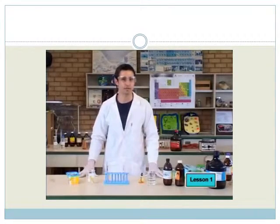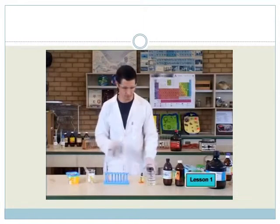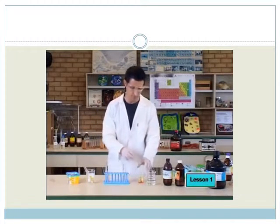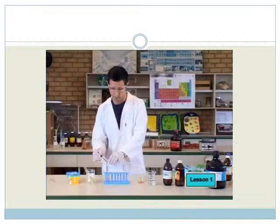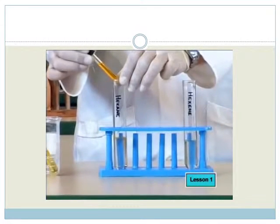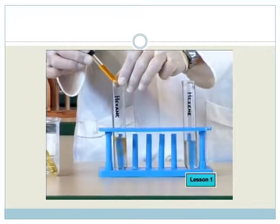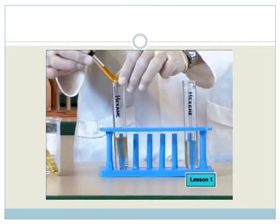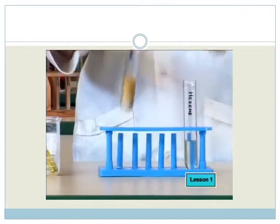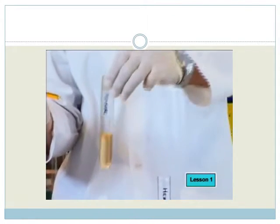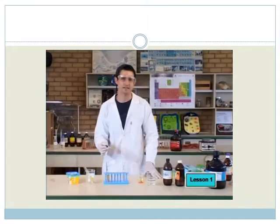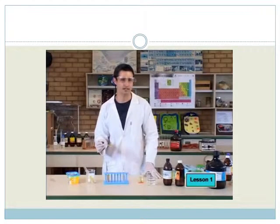We add the red-brown bromine mixture to the hexane first. Hmm. It seems that nothing happens to the color of bromine when it's added to the hexane.